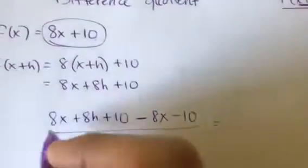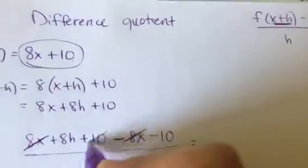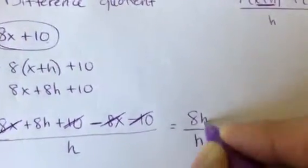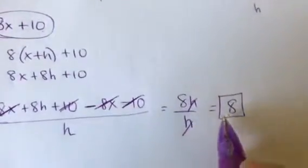Little hint, if you do this right, most of this should cancel. Notice that 8x cancels and my 10s cancel. So I'm left with 8h over h, those cancel, which gives me 8. So that's your answer right there. Nice and pretty.